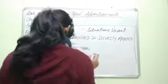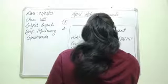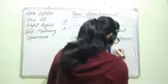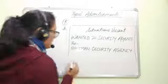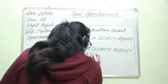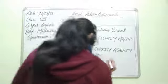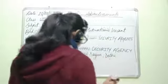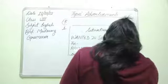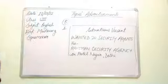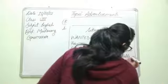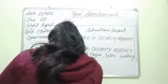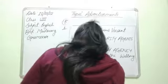Then write 'For Rahiman Security Agency', followed by the address: Patel Nagar, Delhi. After that you would write 'Willing to work in shifts'.